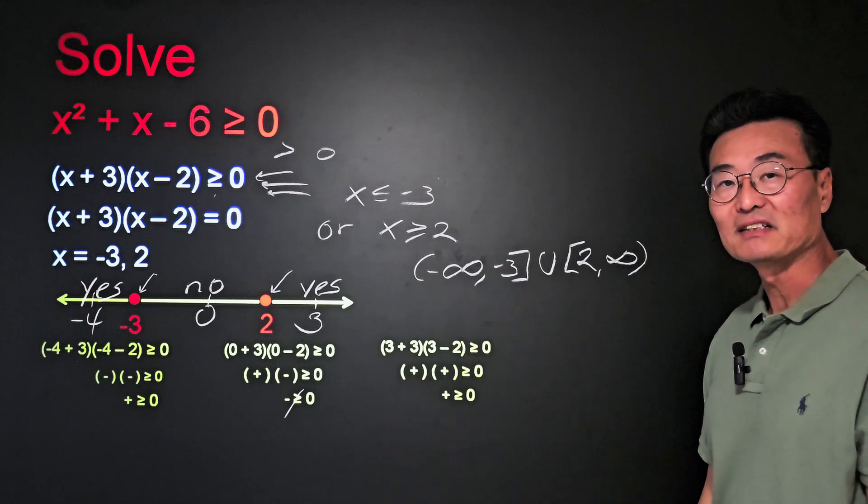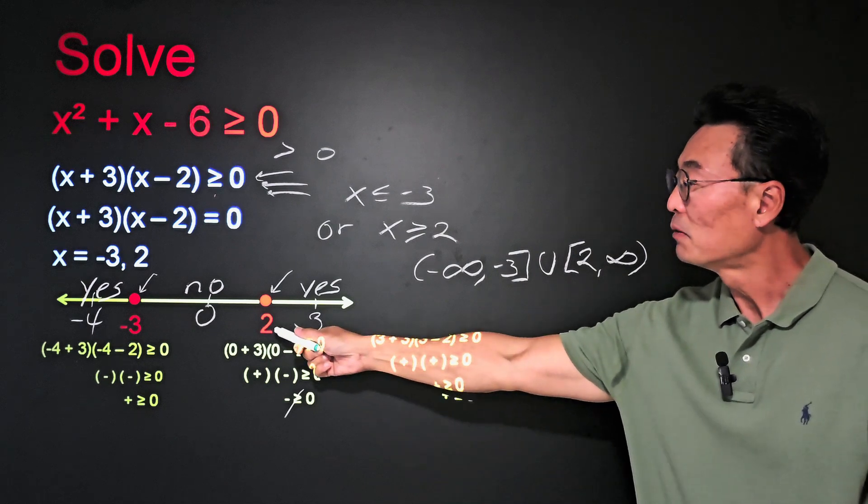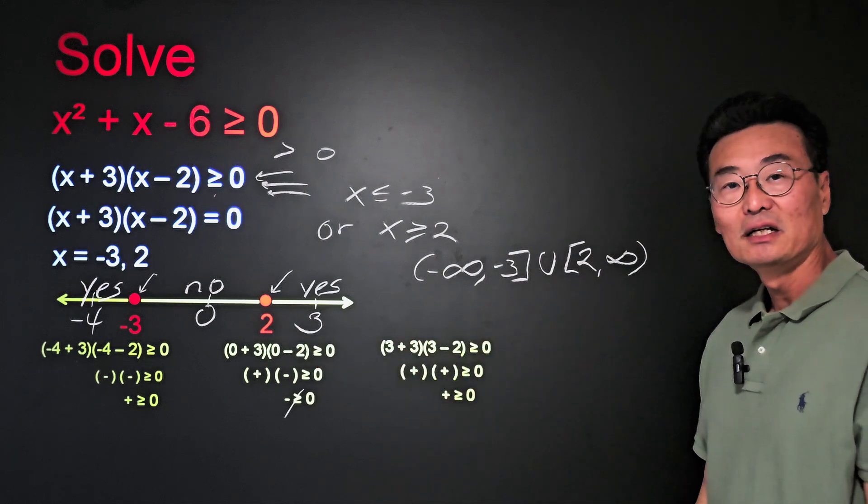Whenever it's infinity, it's always going to be parentheses. And when it includes the numbers, such as the negative 3 and 2, it's going to be the brackets.